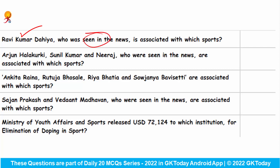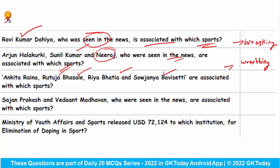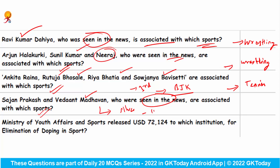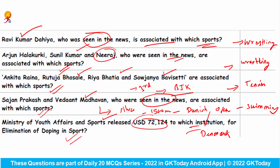Ravi Kumar Dahiya, who was seen in the news recently, is associated with which sport? They are wrestlers. Ankita Raina, Rutuja Bhosale, Rhea Bhatia and Sajan Nabavi Sethi are associated with which sport? They recently backed third place at the Billie Jean King Cup 2022, so they are related to tennis. Sajan Prakash and Vedant Madhavan, who were seen in the news recently, are associated with which sport? They clinched a silver medal in the men's 1500-metre freestyle event at the Danish Open swimming meet held in Copenhagen, Denmark. The correct answer is swimming. The Ministry of Youth Affairs and Sport released funds to UNESCO for the elimination of doping in sport.